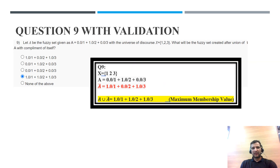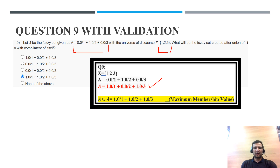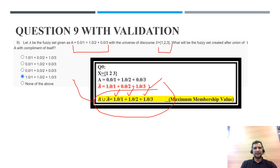Question 9: same universe of discourse X equals {1, 2, 3} with fuzzy set A. The complement is calculated. The question asks: what will be the fuzzy set after union of A with its complement? For union we take the maximum value. Out of 0 and 1, max is 1; out of 1 and 0, max is 1; out of 0 and 1, max is 1. The correct answer is option D.